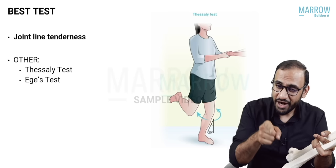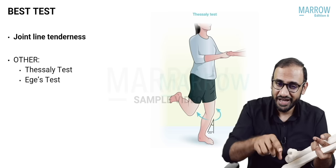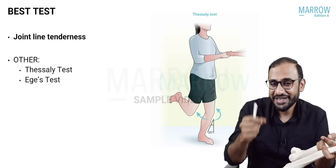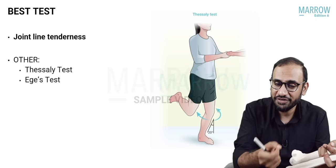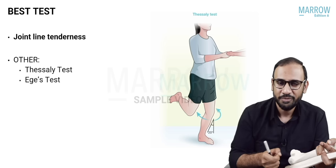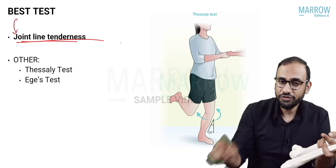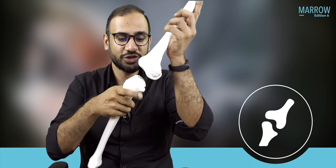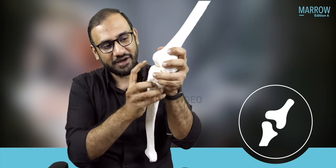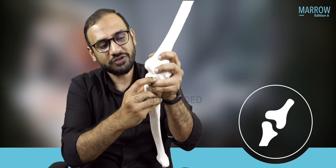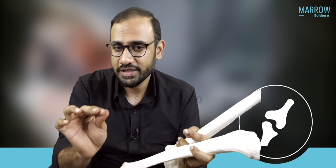There is also the Thessaly test, where you ask the patient to stand on the injured knee, flex the knee slightly, and twist it — a provocative test for meniscus injury. However, all these tests are very painful. The best test is joint line tenderness, where you press along the joint line. The torn piece of meniscus will be painful when pressed. The McMurray test, Apley's grinding test, and Thessaly test all exist, but joint line tenderness is the best clinical test.